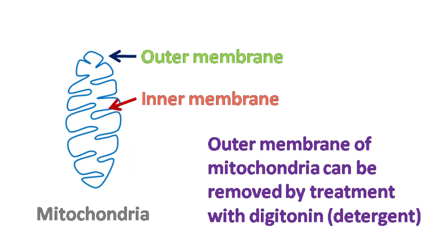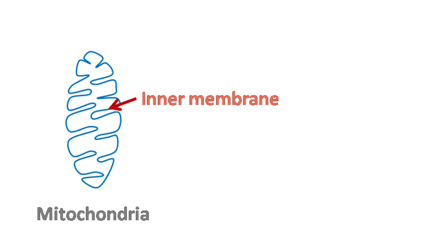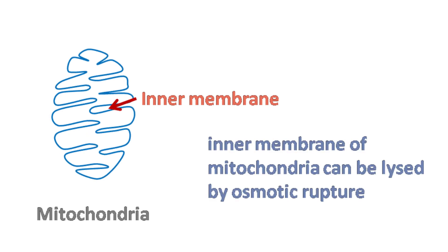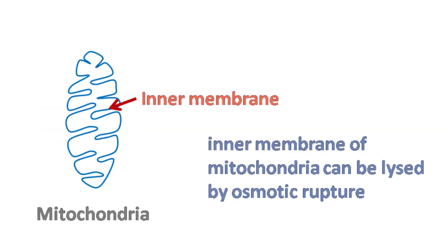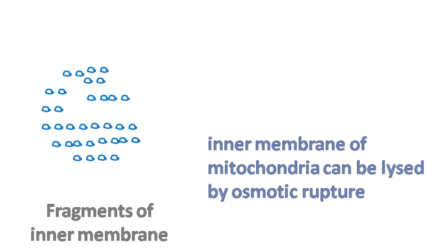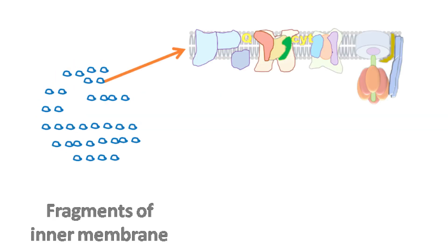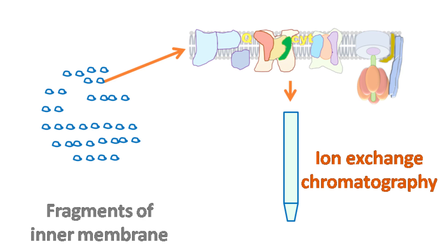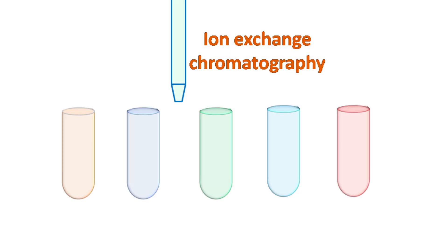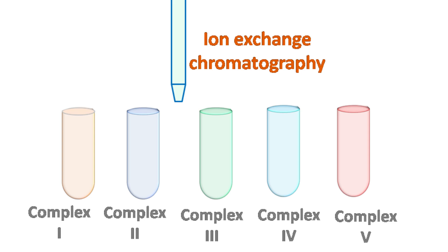The outer mitochondrial membrane can be removed by treatment with detergent like digitonin. The fragments of inner mitochondrial membrane can be obtained by osmotic rupture and dissolved by a detergent. The proteins present in the fragments of inner mitochondrial membrane can be separated by ion exchange chromatography. These resolved components are known as Complex 1, 2, 3, 4, and 5.